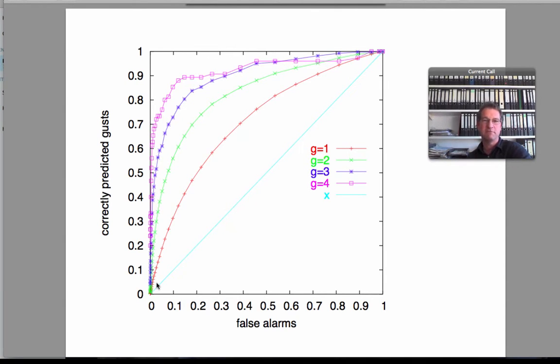When we put this threshold probability very low we produce many alarms, that's the upper right part of this ROC curve. When we put this threshold probability very high we rarely produce an alarm and that's the lower left part of this ROC curve.